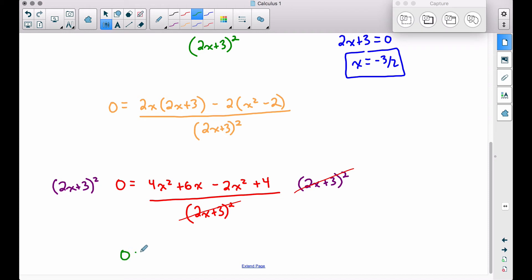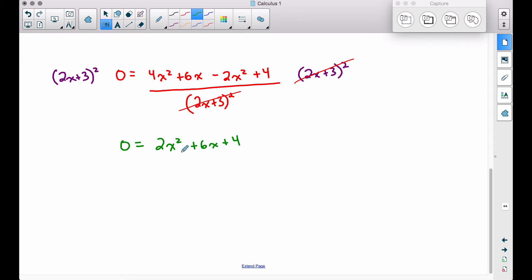So now we have zero equals, let's combine like terms, 4x squared minus 2x squared is 2x squared, plus 6x, and then plus the 4. Now we have a quadratic equation that we want to solve here. Since all of these coefficients and numbers here are even, we can go ahead and divide everything by two.